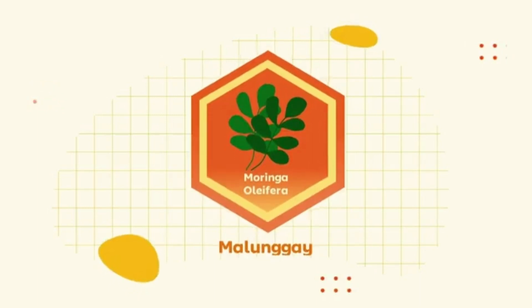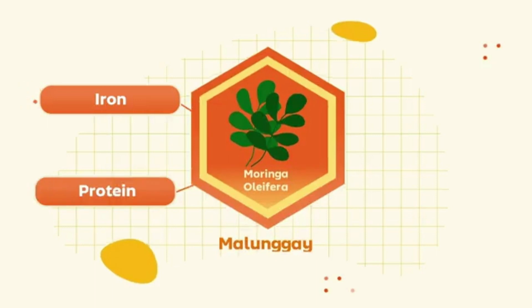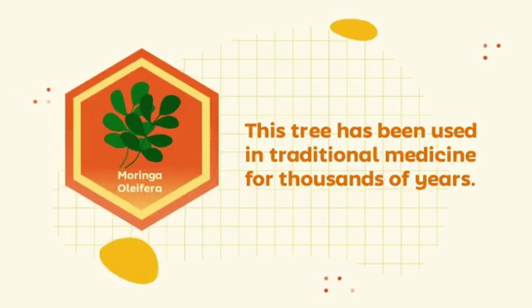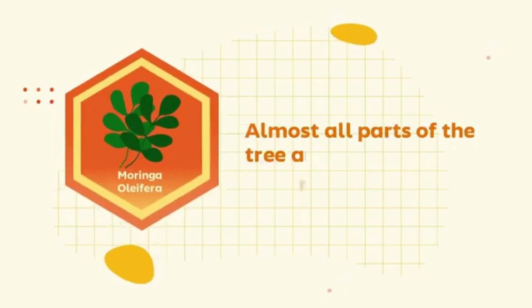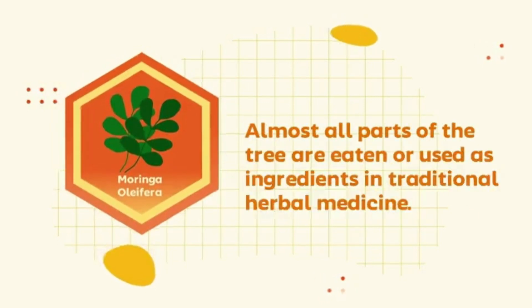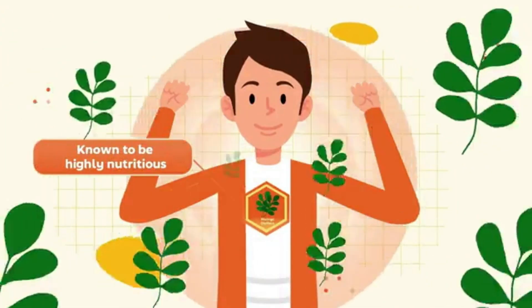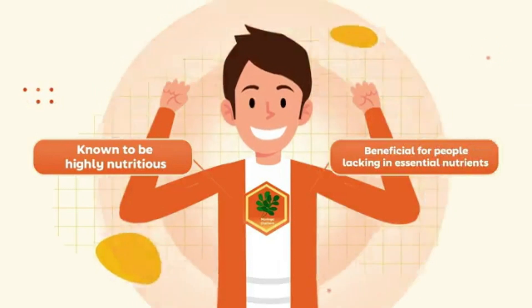is known to be one of the richest plants in iron, protein, and vitamins A and B. This tree has been used in traditional medicine for thousands of years. Almost all parts of the tree are eaten or used as ingredients in traditional herbal medicine. Moringa leaves are known to be highly nutritious and beneficial for people lacking in essential nutrients.